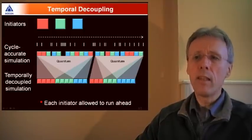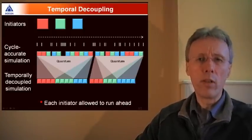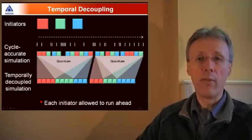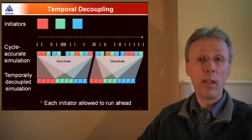Each initiator is permitted to run ahead up to a quantum boundary and then the next initiator gets a turn. So by setting the size of the quantum, you can effect a trade-off between simulation speed and timing granularity. A really large quantum gives a significant simulation speed up and a corresponding reduction in timing accuracy.